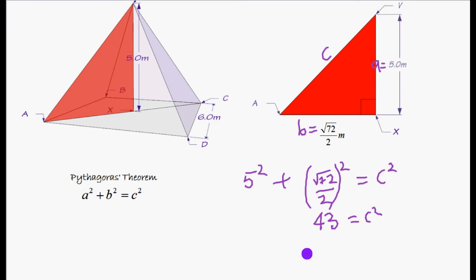So therefore, the answer for AV is going to be the square root of 43.